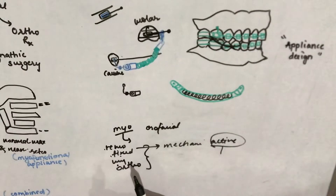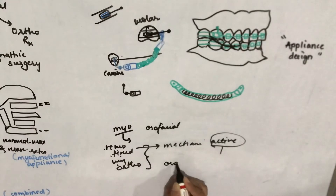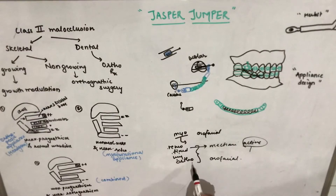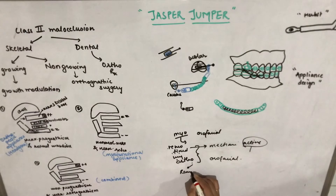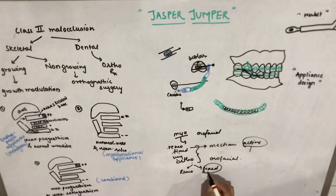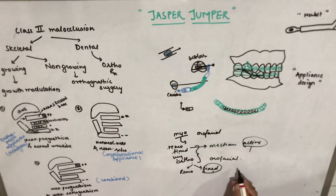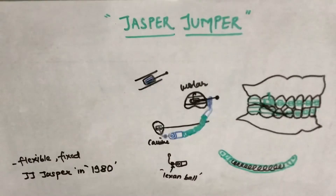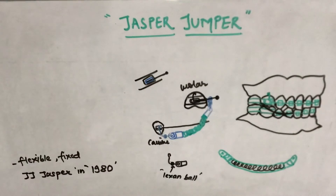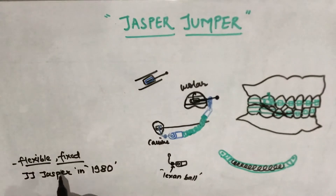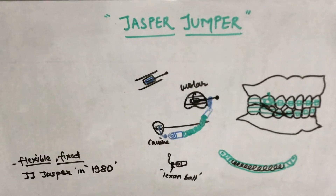Myofunctional appliances depend on the orofacial musculature rather than active components. They are broadly divided into removable and fixed types. The Jasper Jumper is a fixed myofunctional appliance. It is used in Class 2 cases and is a relatively new, flexible, fixed, tooth-borne appliance. The Herbst appliance is another example of a fixed myofunctional appliance.